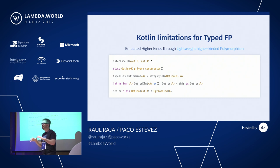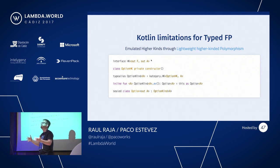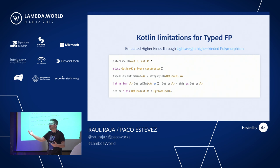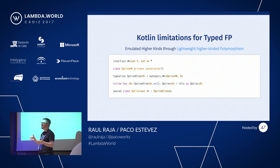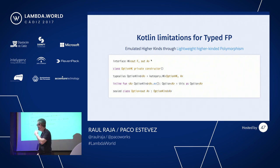When you're working with generic information — when your function return types are irrelevant to the container — you can just say return an HK of F of Integer, of User, of whatever. The F is going to be provided by the user who also has to do the safe downcast to get the final information. And this is quite cumbersome.